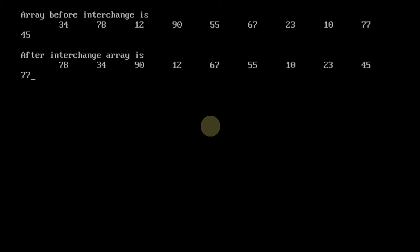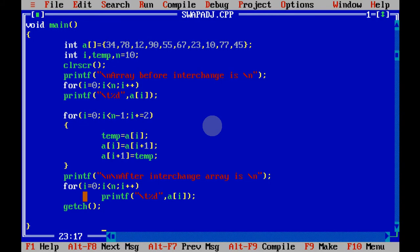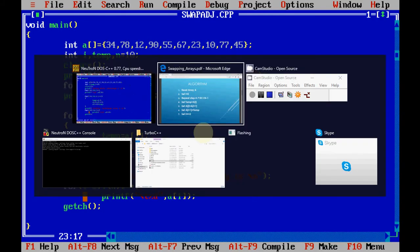Executing the program: we have our initial array as 3, 4, 7, 8, 1, 2 and all 10 elements. In the resultant output, adjacent elements are swapped — we get 7, 8, 3, 4 as the first four elements, then 9, 0, 1, 2 are swapped accordingly. This is how our program for swapping adjacent positions works.